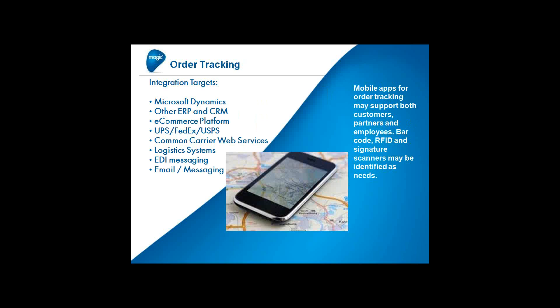Order tracking is a very common requirement — people out of the office need to answer the question, 'where's my stuff?' Integration targets include traditional ERP and CRM, your e-commerce platform, UPS, FedEx, U.S. Postal Service, other logistics touch points, common carriers, and logistic systems, potentially including EDI messaging integration and email. Mobile apps for order tracking need to support customers, partners, and employees, with barcoding, RFID, and signature scanners as possible requirements depending on the application audience.